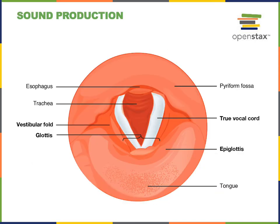Sound production for speech is another major function of the respiratory system. In the larynx, there are vocal cords that are elastic ligaments that vibrate as air is forced in between these bands of elastic connective tissue. That vibration creates the sound that we use for speech.